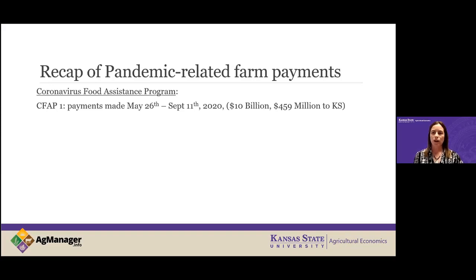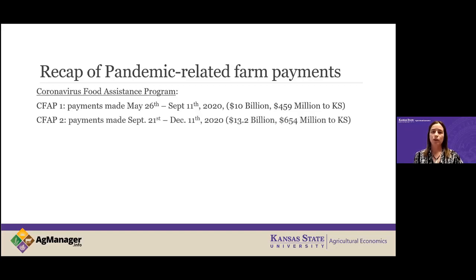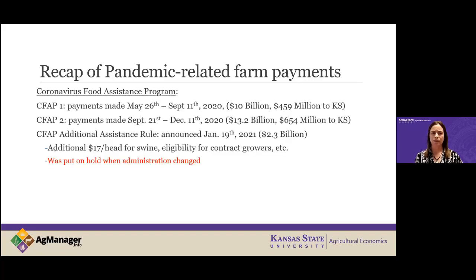Just to give you a little review of these programs since they started during the pandemic last year. CFAP — the Coronavirus Food Assistance Program — was announced for the first time last summer, end of May. CFAP 1 made $10 billion in payments to agricultural producers; $459 million of that came to Kansas. CFAP 2 was announced last fall — September through December 2020 — paying out $13.2 billion to date, with $654 million coming to Kansas.